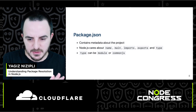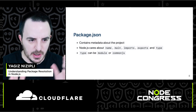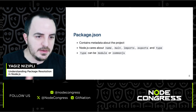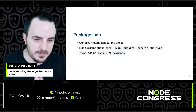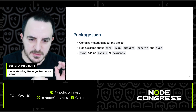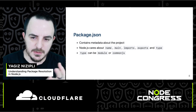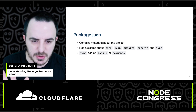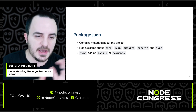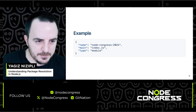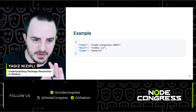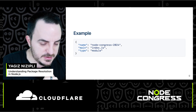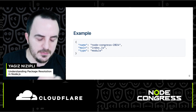We talked about CommonJS file extensions and .mjs file extensions. So how do we actually know what's going on? We have the package.json file in all our projects — it contains metadata about our project — but Node.js only cares about five fields: name, main, imports, exports, and type. For the sake of this presentation, I'm going to focus on the type attribute. Type can be 'module' or 'commonjs'. For example, we have a name field (node-congress-2024), a main attribute, and a type set to 'module'.